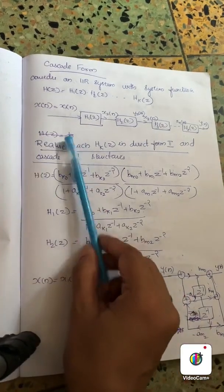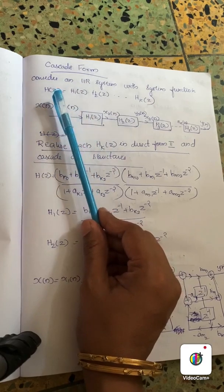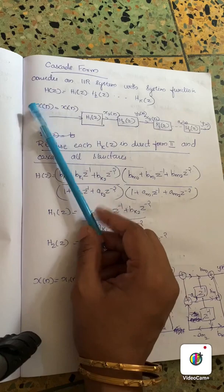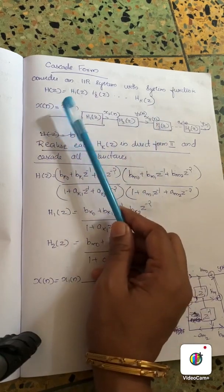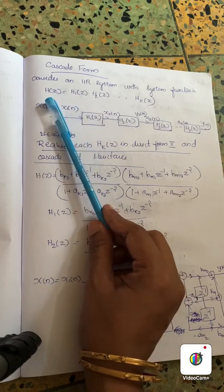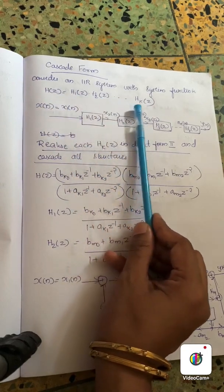Good morning students, here we are going to talk about Cascade Form Structure. Cascade Form is a combination of multiple transfer functions. In general expression, we have H1 of Z, H2 of Z, etc.